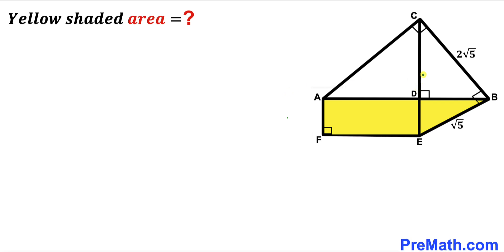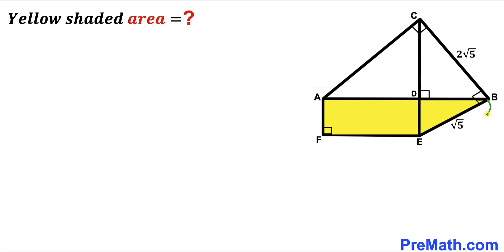Welcome to pre-math. In this video we have got a right triangle ABC and a yellow trapezoid ABF put together as shown in the diagram, along with a perpendicular CE, such that side length BC is 2 times square root of 5 units, whereas side length BE is square root of 5 units.